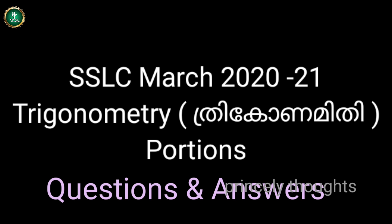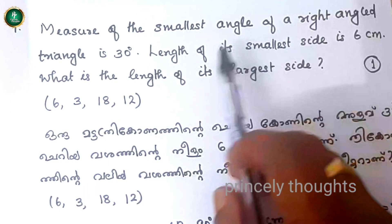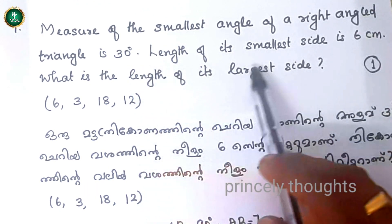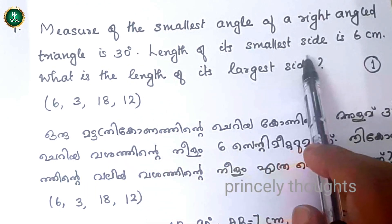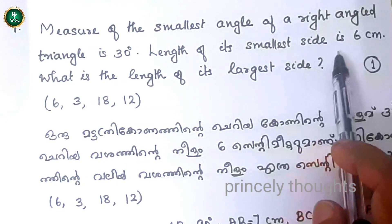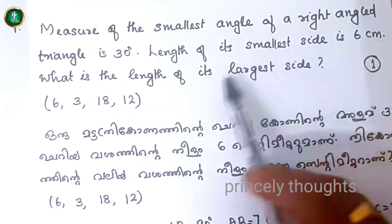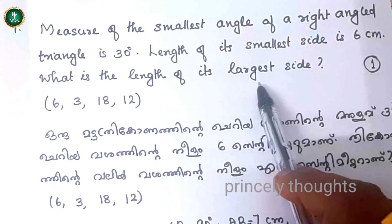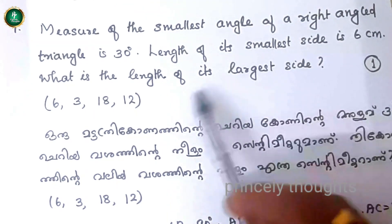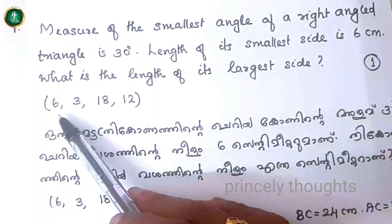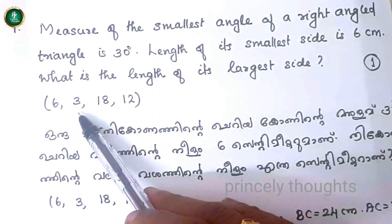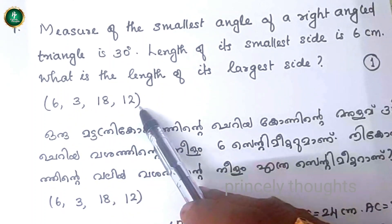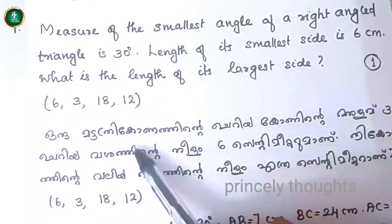We will discuss this question: the measure of the smallest angle of a right triangle is 30 degrees. The length of the smallest side is 6 cm. What is the length of its largest side? The options are 6√3, 18, and 12.